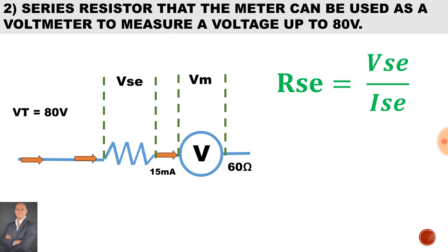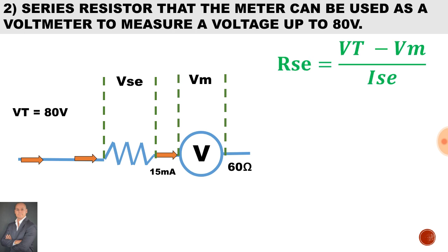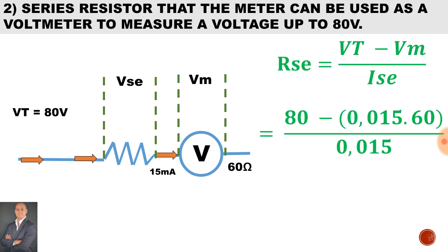To calculate these unknown factors: the volt drop across the winding will be the total voltage minus the volt drop across the meter. The current through the series winding will be the same as the current through the meter. Therefore, the total voltage of 80 volts minus the volt drop across the meter, divided by the current through the meter, gives us a series resistor value of 5273.33 ohms.